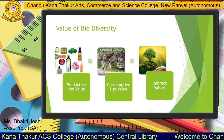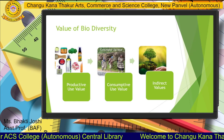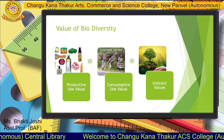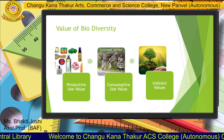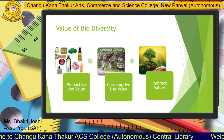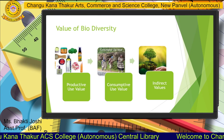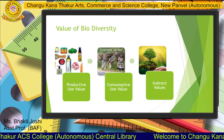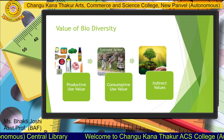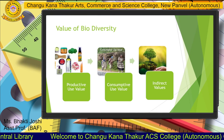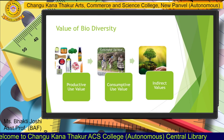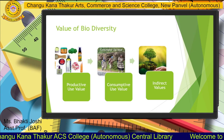The second is consumptive use value — natural products that are consumed directly from nature. It includes non-timber forest products such as leaves, cane, grass, and firewood, which are collected by tribal people for building their homes or for their own consumption. These come under the consumptive use value of biodiversity.